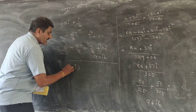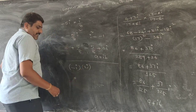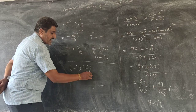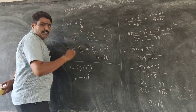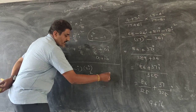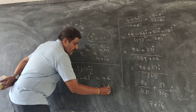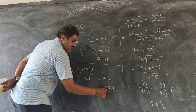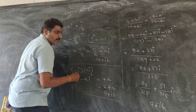One more example: minus i into 2i. Here i into i is i squared, so we get minus 2i squared. But we know i squared equals minus 1, so it becomes plus 2. We can also write this as 2 plus 0i, which is again in the standard form of A plus iB.